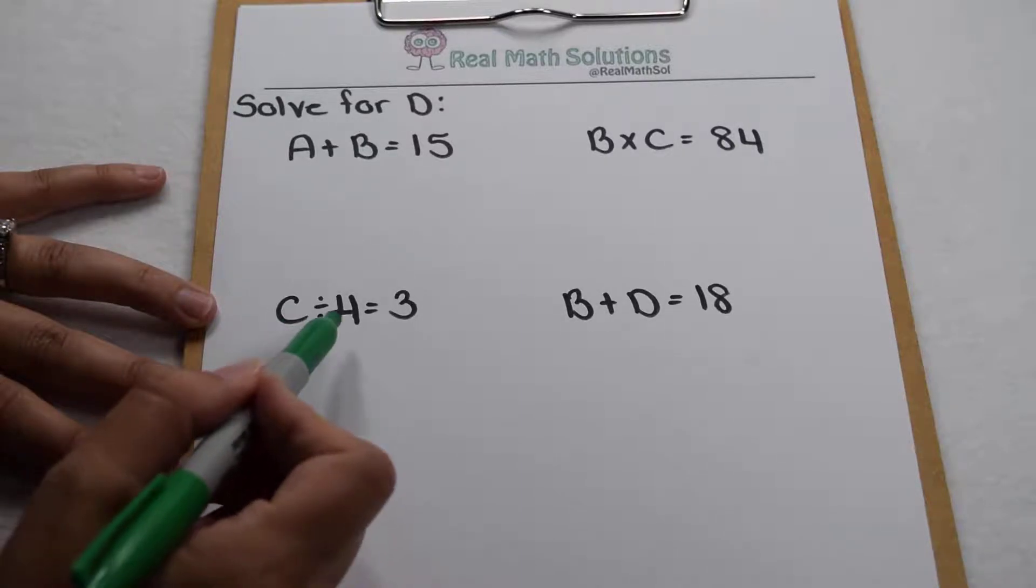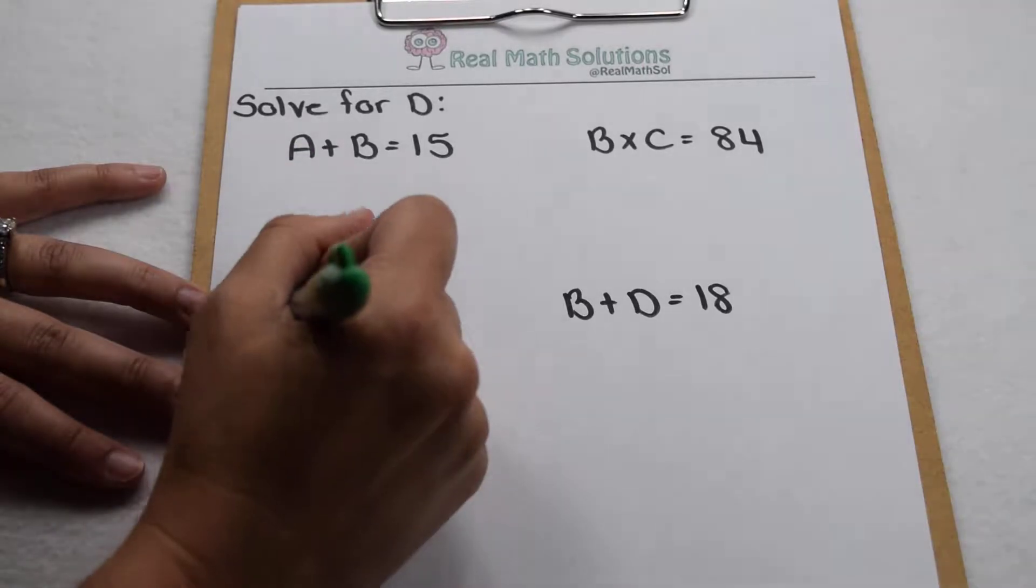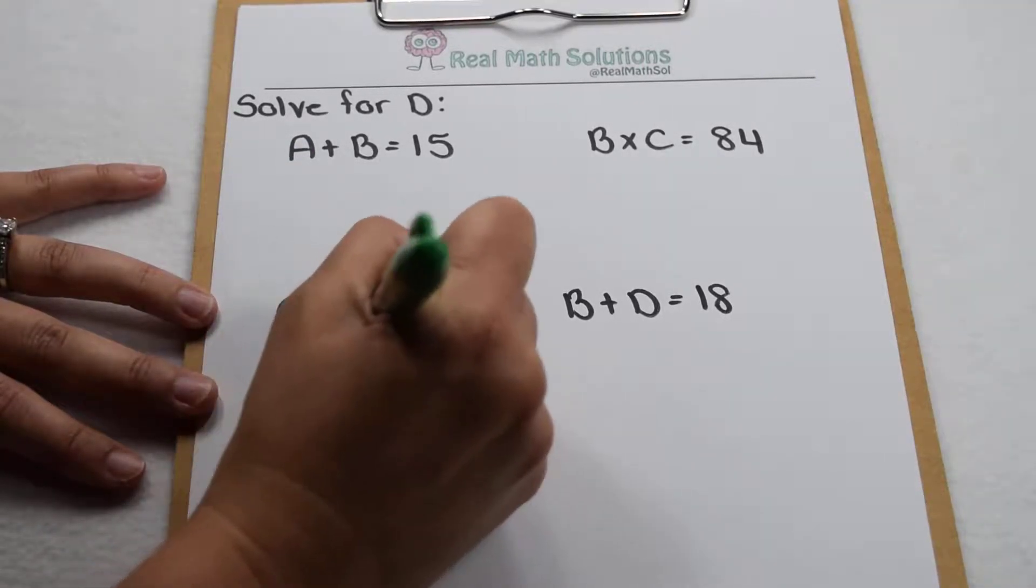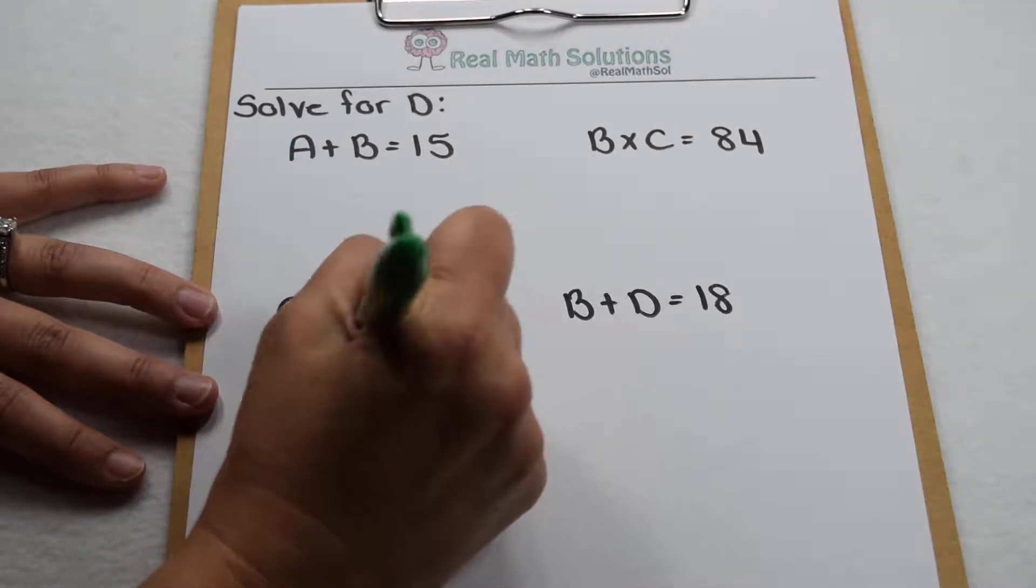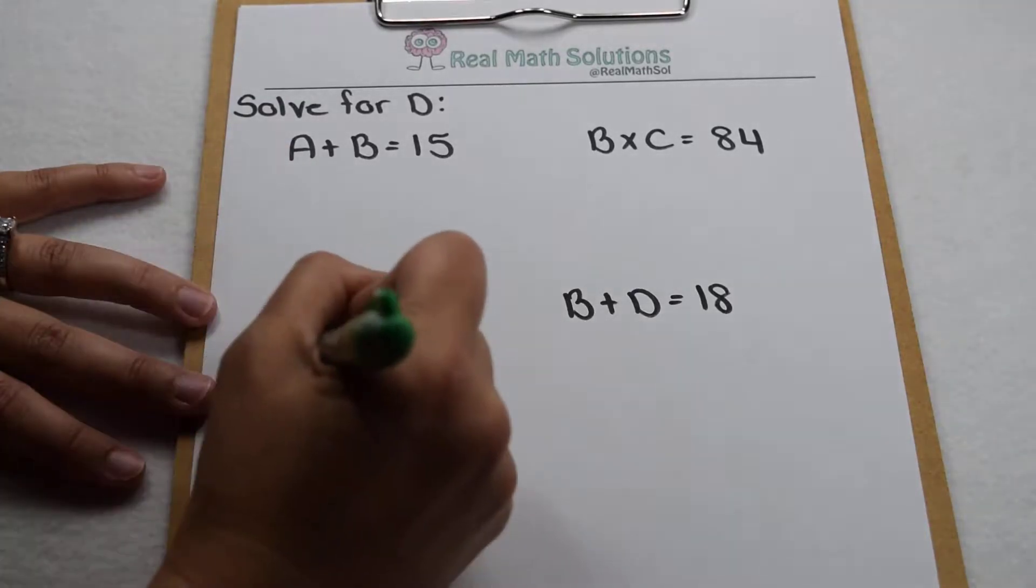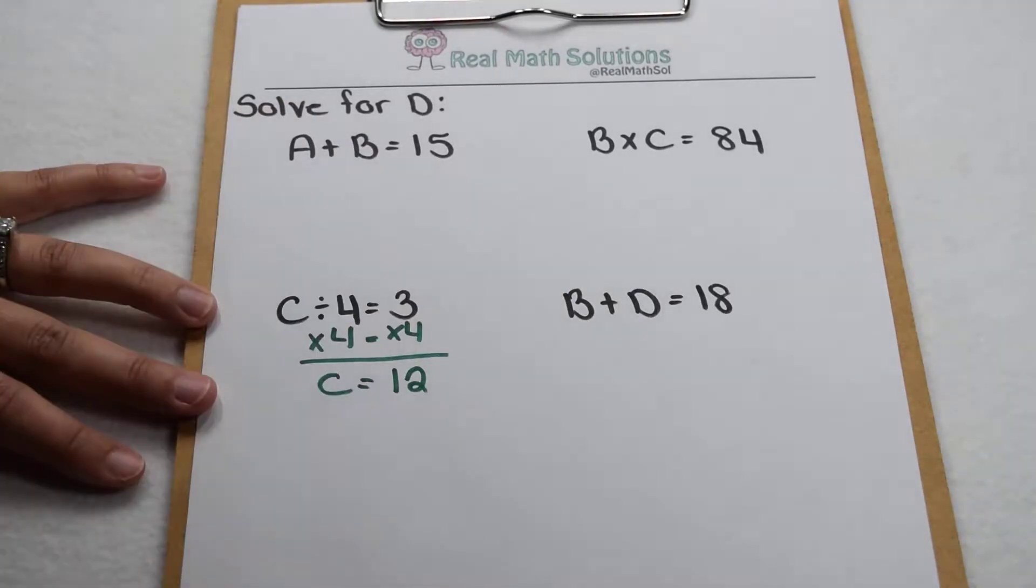Right now we know that c divided by 4 gives me 3. So undo that and we'll multiply both sides by 4. So when I multiply both sides by 4, that's going to tell me that c is going to be equal to 12.